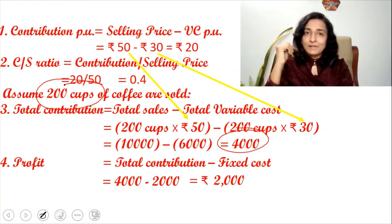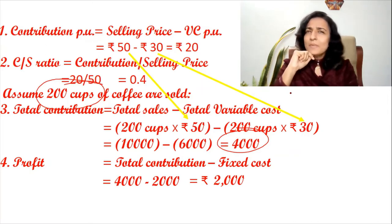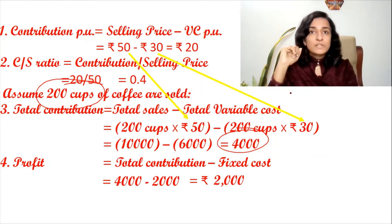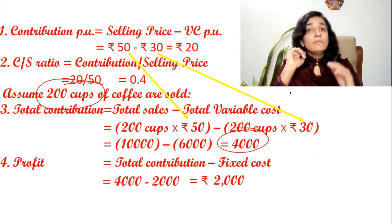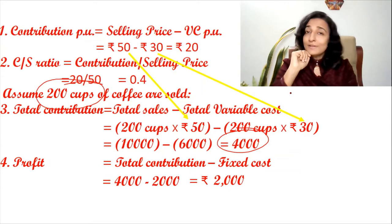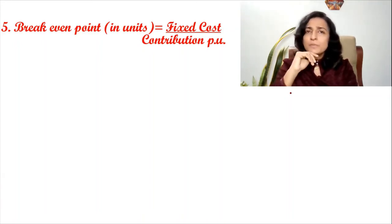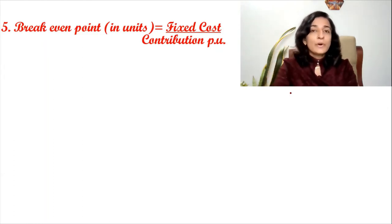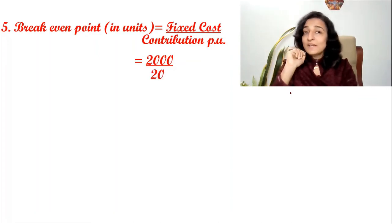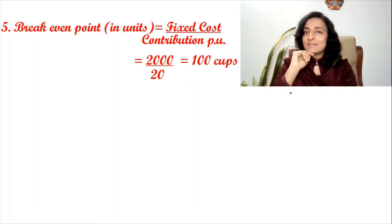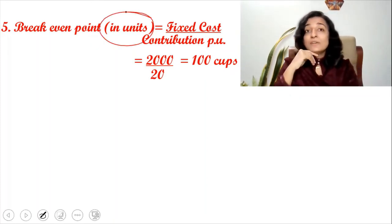As a businessman, our next interest is to know the minimum number of units to sell to reach the breakeven point. The breakeven point is the no profit, no loss situation. The formula for breakeven point in units = fixed cost divided by contribution per unit. Fixed cost = 2,000 rupees and contribution per unit = 20 rupees, so breakeven point = 2,000 ÷ 20 = 100 cups. Selling 100 cups gives no profit and no loss.